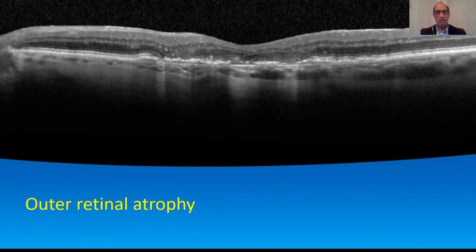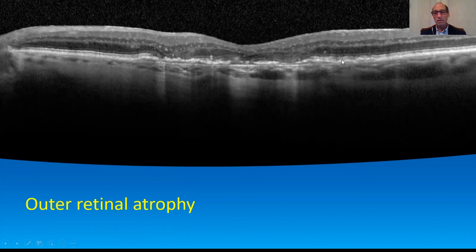Outer retinal atrophy is a very common finding. You look and see your outer nuclear layer — here all the layers are intact, and then you go here and you get loss of your outer nuclear layer and loss of the external limiting membrane. The external limiting membrane tends to correlate with vision, so that's an important thing to look at.